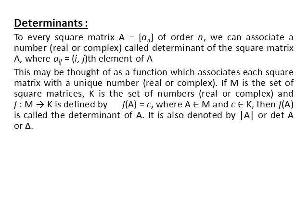To every square matrix A of order n, we can associate a number called the determinant of the square matrix A. We can define it as a function which associates each square matrix with a unique number. If M is the set of square matrices, K is the set of numbers, and F is a mapping from M to K defined by F(A) equals C, where A belongs to M and C belongs to K, then F(A) is called the determinant of A.